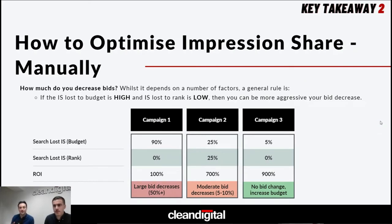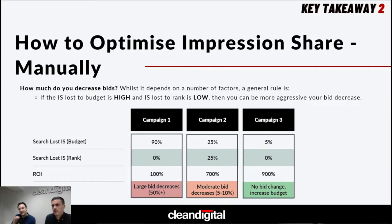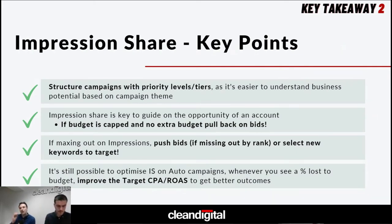The best approach to understanding changes needed to make campaigns more efficient comes back to that 'search loss by budget' metric. In this example campaign one, we're seeing that metric is extremely high — losing out on 90% of impressions. We're advocating that bid reductions be very aggressive: 50% plus. As that number trends down following your changes — as in campaigns two and three — the bid changes become less aggressive. It's a bit of a seesaw, finding the right balance between maximizing clicks whilst pulling back those bids and making campaigns as efficient as possible.